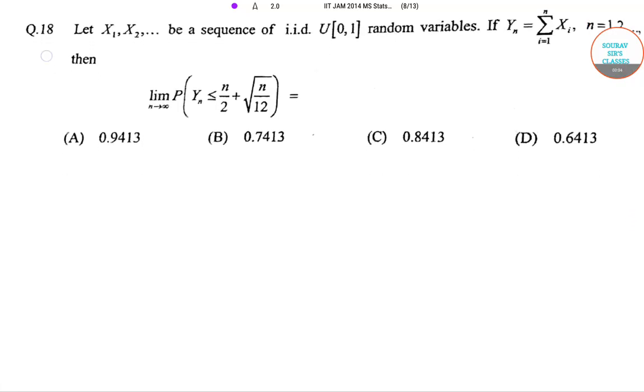Hello students, welcome to Sort of Search Classes. The question is: Let X1, X2, and so on be a sequence of i.i.d. uniform [0,1] random variables. If Yn equals the summation of Xi where i ranges from 1 to n, then find the probability that Yn is less than or equal to n/2 plus root(n/12) given n tends to infinity.